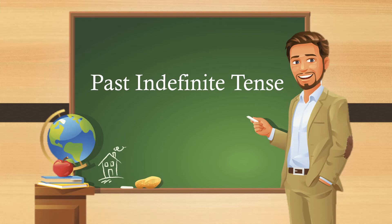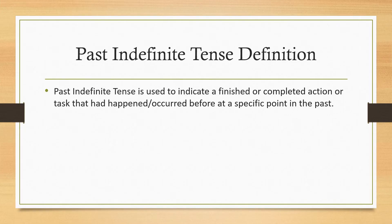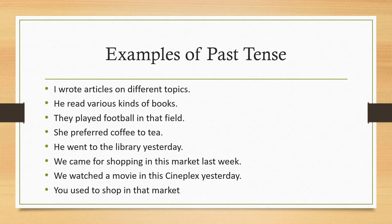Hi and assalamu alaikum friends, welcome back to my YouTube channel. Today we are going to read and learn past indefinite tense, so let's get started. Past indefinite tense definition: past indefinite tense is used to indicate a finished or complete action or task that had happened or occurred before at a specific point of time in the past.